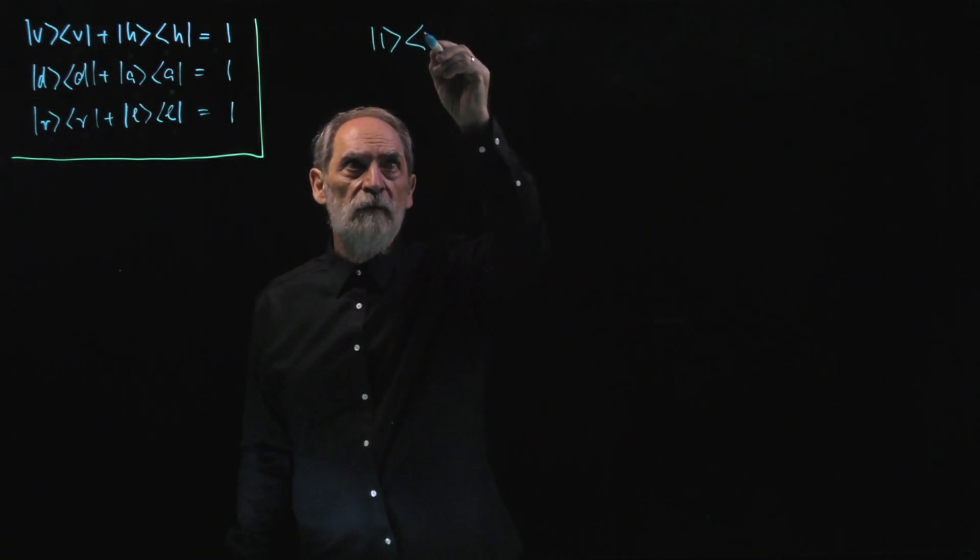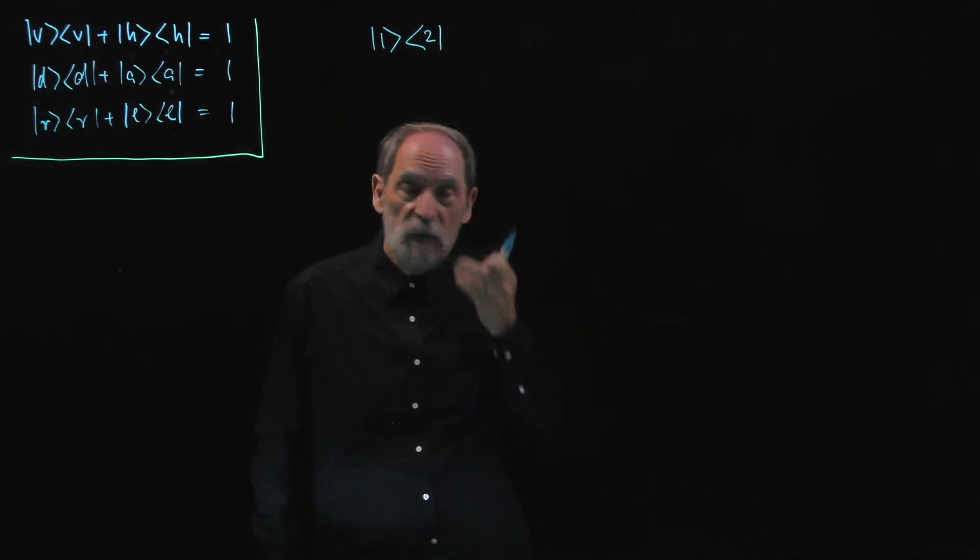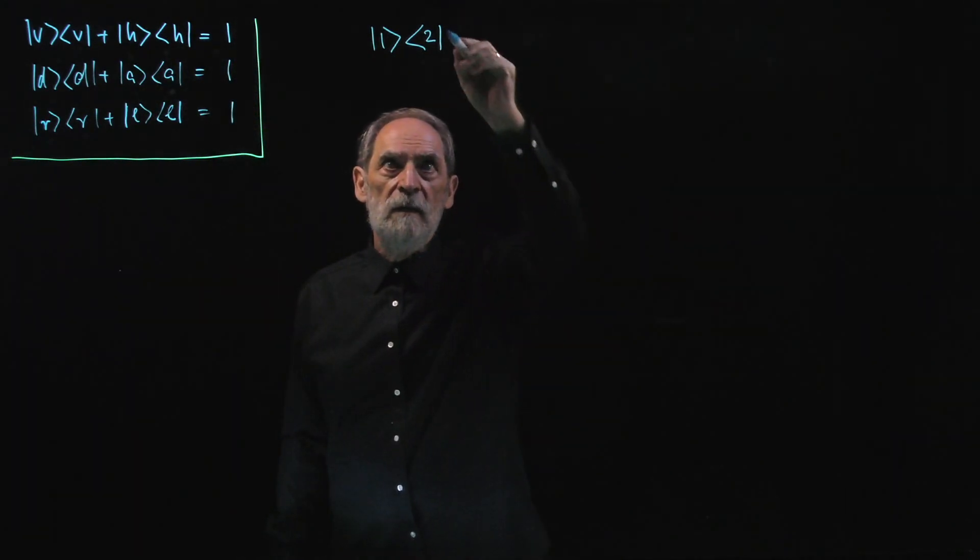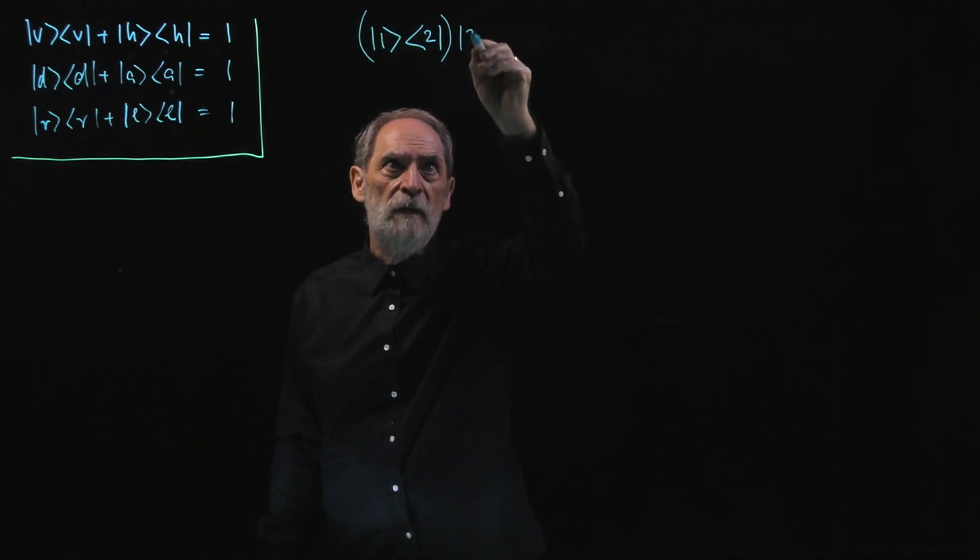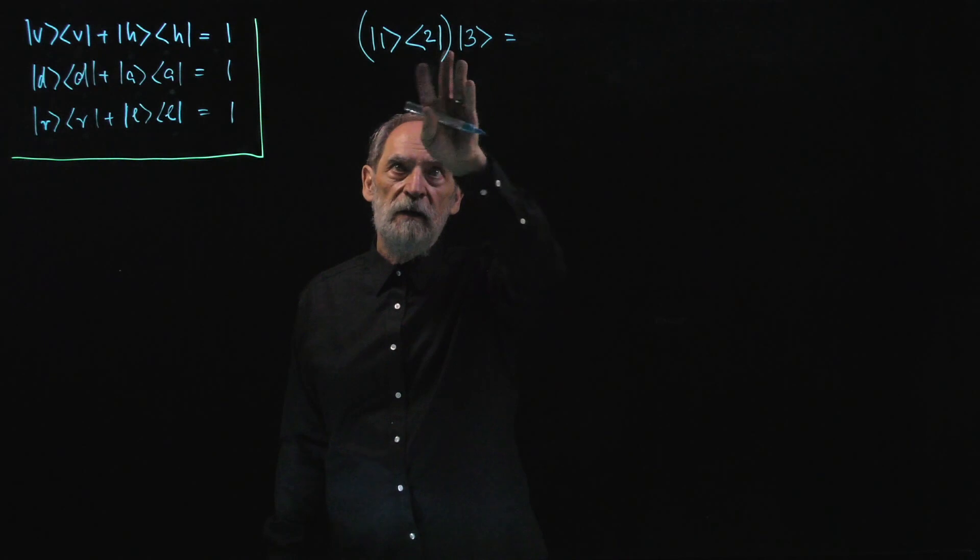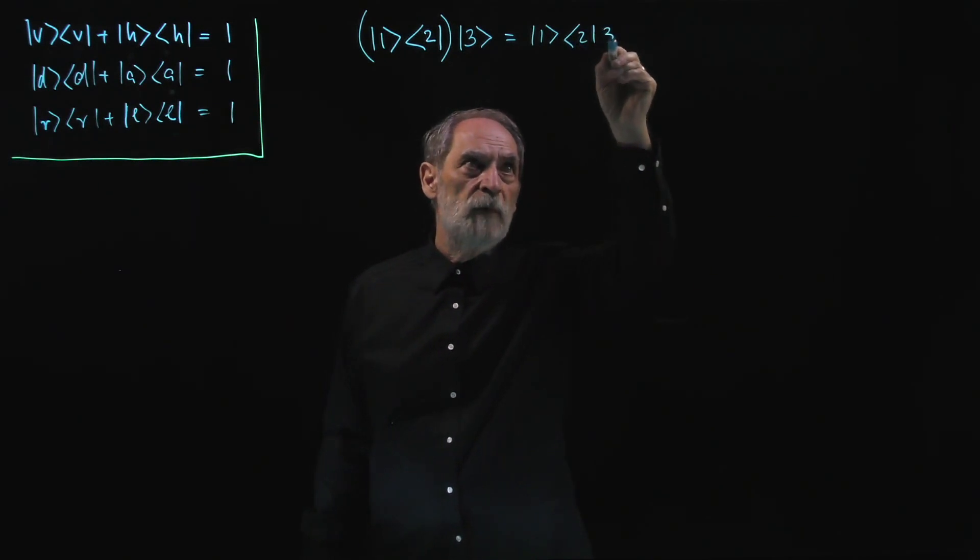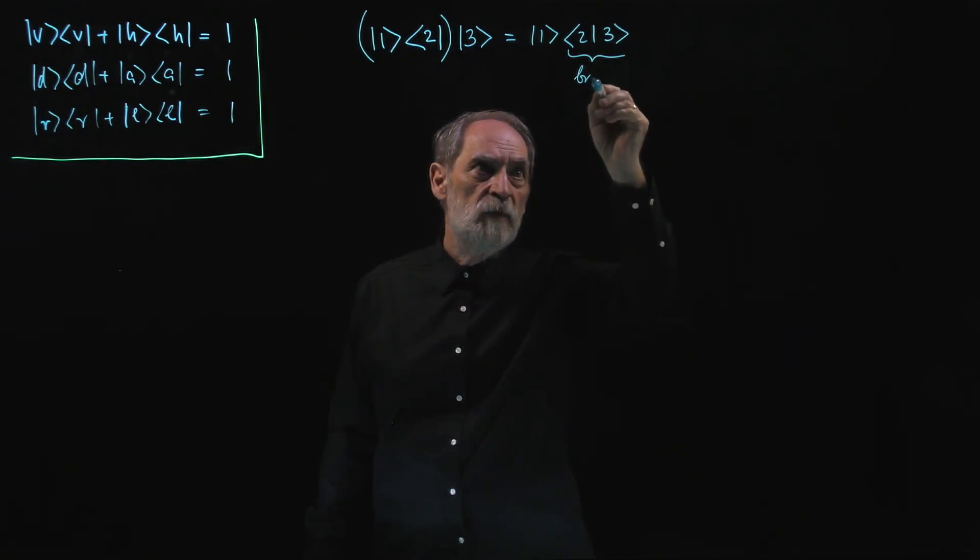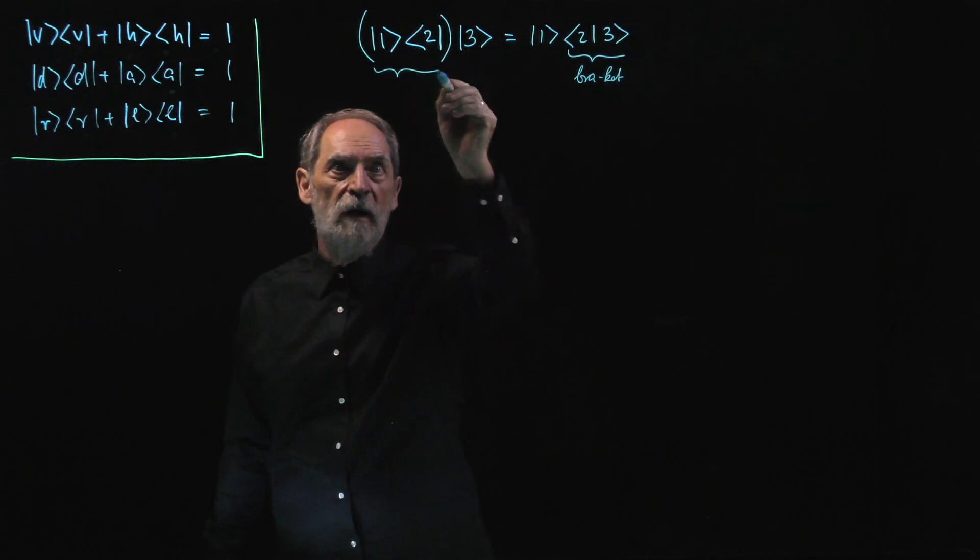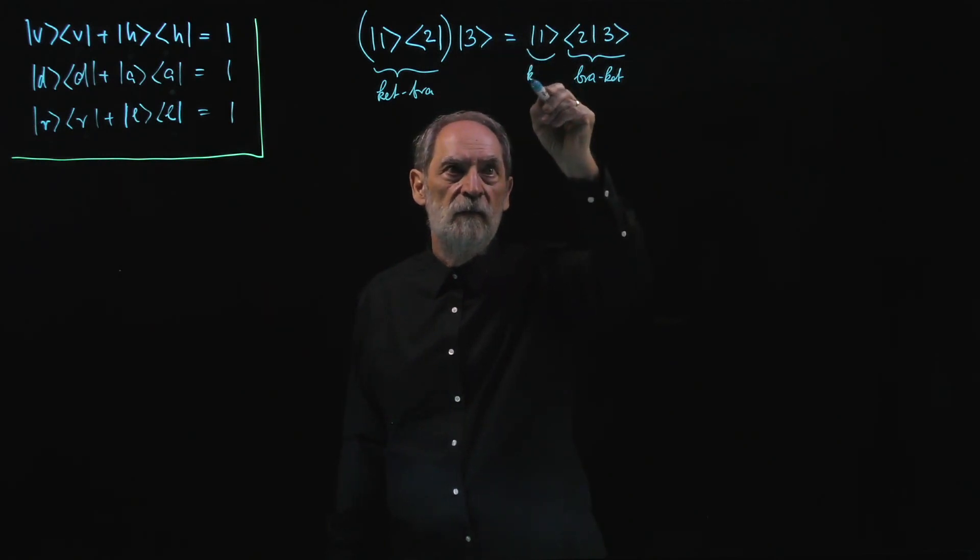So if we have a generic ket-bra with ket-bra labels that could mean either one of those or something else, and then we apply this ket-bra to another ket, then what do we get? Well, these are products, and as always when we have products, we can combine the factors any way we like. So here I put the ket-bra aside, and I just multiply the bra-2 with the ket-3. So I here get a bra-ket, which is a number, and here I have a ket-bra, and that's not a number. So the ket-bra is a new object when applied to a ket. It gives another ket. So it maps a ket onto a ket.